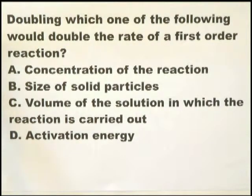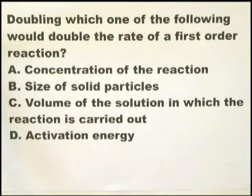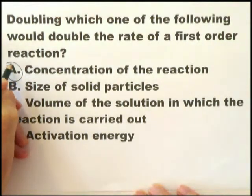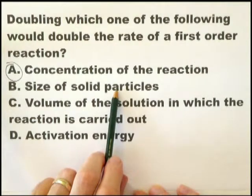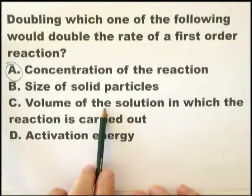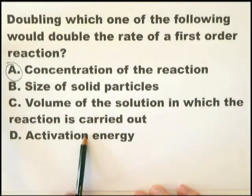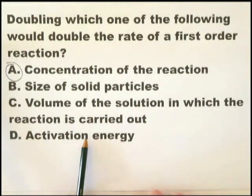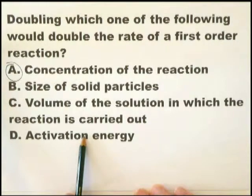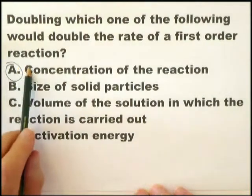This is another question where you're expected to understand that certain things are directly related to reaction rates. The only one directly related to a reaction rate — specifically a first-order reaction rate — is the concentration of the reactant. If you double the size of solid particles, the reaction rate would slow down. If you double the volume, the reaction rate would slow down. If you double the activation energy — and changing activation energy is difficult because it's specific to a reaction — usually you reduce it with a catalyst to increase the rate. The only thing that fits is concentration of the reactant.